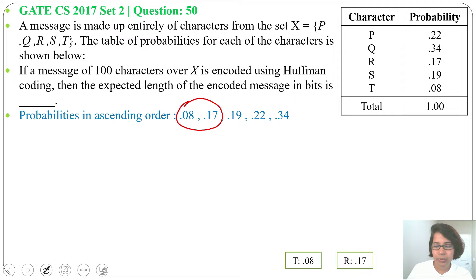I will add these two. After adding I will get 0.25. So I will insert this in the queue. 0.25 will be after 0.22 and before 0.34. So I insert 0.25 after 0.22 and before 0.34.